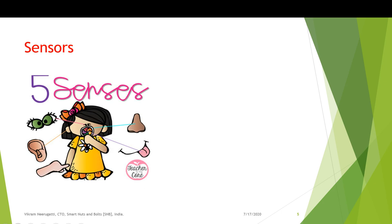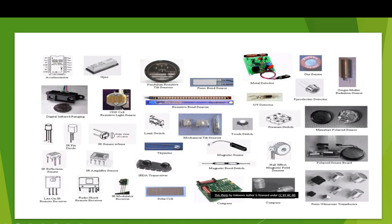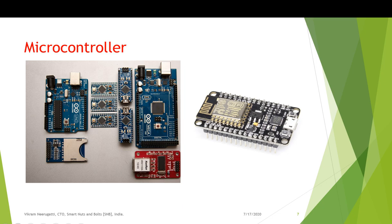Sensors are developed from the basic idea of human sense organs — eyes, ears, nose, tongue, and skin. From that we have various types of sensors: seeing sensors, gas/smell sensors, touch sensors, mic sensors, and taste sensors. We have many sensors, such as one that reads moisture level from soil, temperature and humidity (thermostat), and light intensity — so based on the intensity of light we can switch a fan on or off.